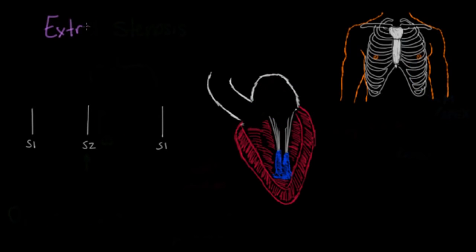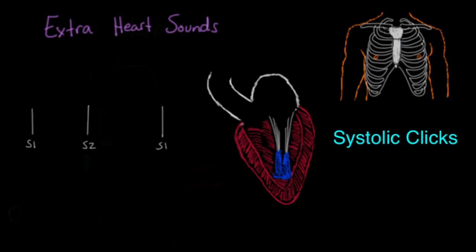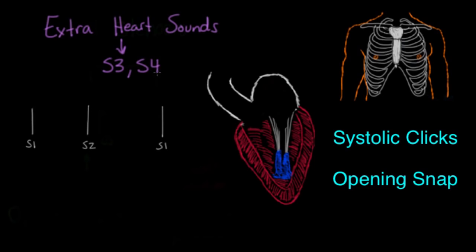The last topic is extra heart sounds. We've already covered two types: the click — which can be an ejection click associated with aortic stenosis, or a non-ejection click occurring later in systole associated with mitral valve prolapse — and the opening snap, associated with mitral stenosis. The other two important extra heart sounds are S3 and S4. We have S1 and S2, so these are the next two heart sounds, and generally when they're present, it's not a good thing.